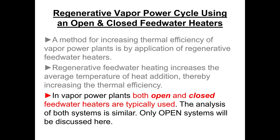So this system requires two pumps, whereas in the closed feed water system both streams remain separate, as in a typical shell and tube heat exchanger. Since the streams are separated they can be at different pressures, so we can use a single pump. For this overview I'm only going to cover the open feed water regeneration system, but the results and method of analysis can readily be adapted to closed feed water heater systems.